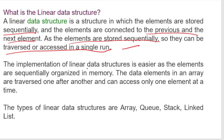The implementation of linear data structures is easier as the elements are sequentially organized in memory. The data elements in an array are traversed one after another — you can access only one element at a time. Types of linear data structures are: array, stack, queue, and linked list.